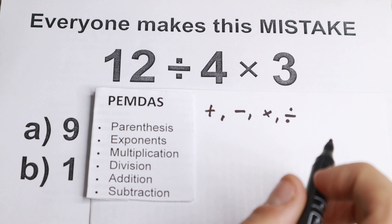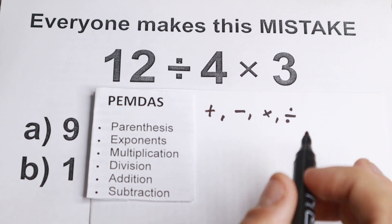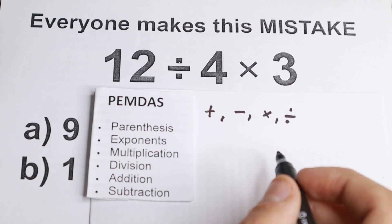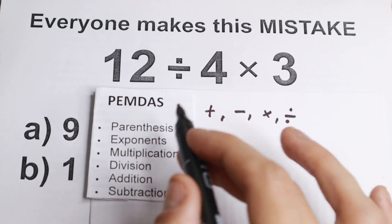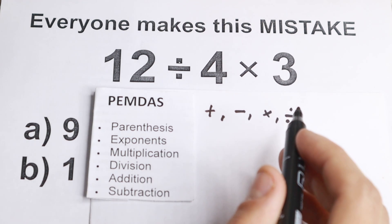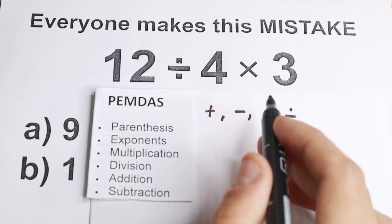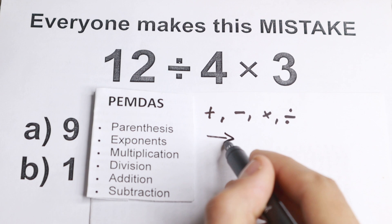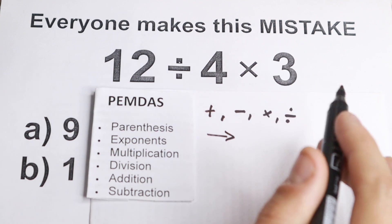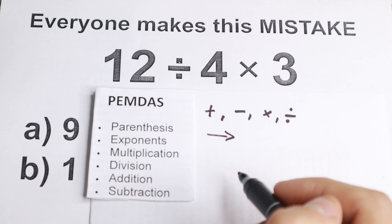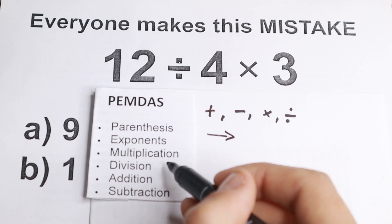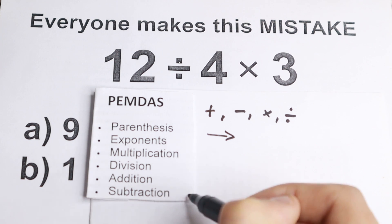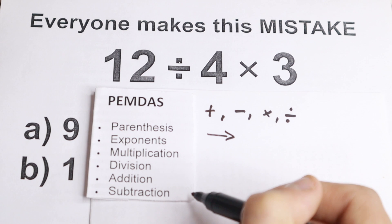A lot of students make this error — it's really not their fault, there is confusion about it. Most people think that you're going to do this in a strict left-to-right order. In other words, you're always going to do multiplication before division, and then addition before subtraction. However, that's not the way this works.